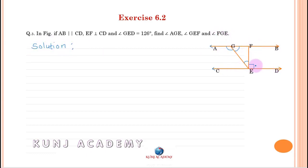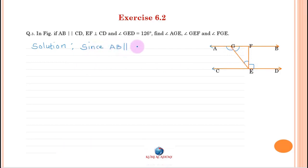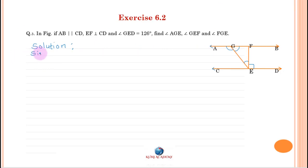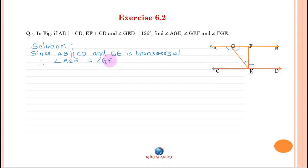Since AB is parallel to CD and GE is a transversal, therefore angle AGE is equal to angle GED — alternate angles. Angle GED is equal to 126 degrees, as given. Therefore angle AGE equals 126 degrees.